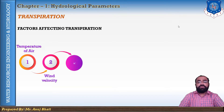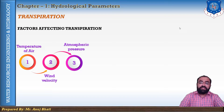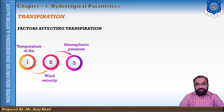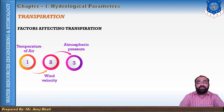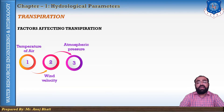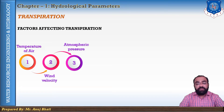The third factor is atmospheric pressure. A reduction of atmospheric pressure reduces the density of the external atmosphere, which allows more rapid diffusion of water. Thus, a decrease in atmospheric pressure increases the rate of transpiration. The plants growing on hills show a higher rate of transpiration because of low atmospheric pressure, and they therefore develop xerophyte characteristics. At high altitudes, the rate of transpiration is more because of the lower atmospheric pressure.